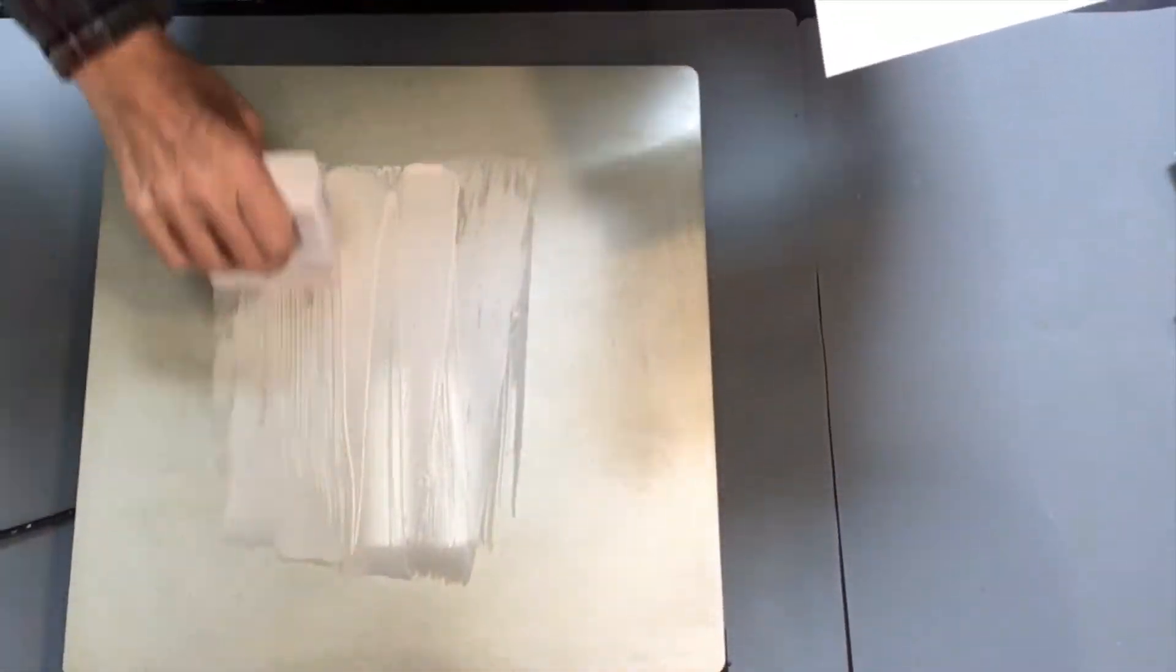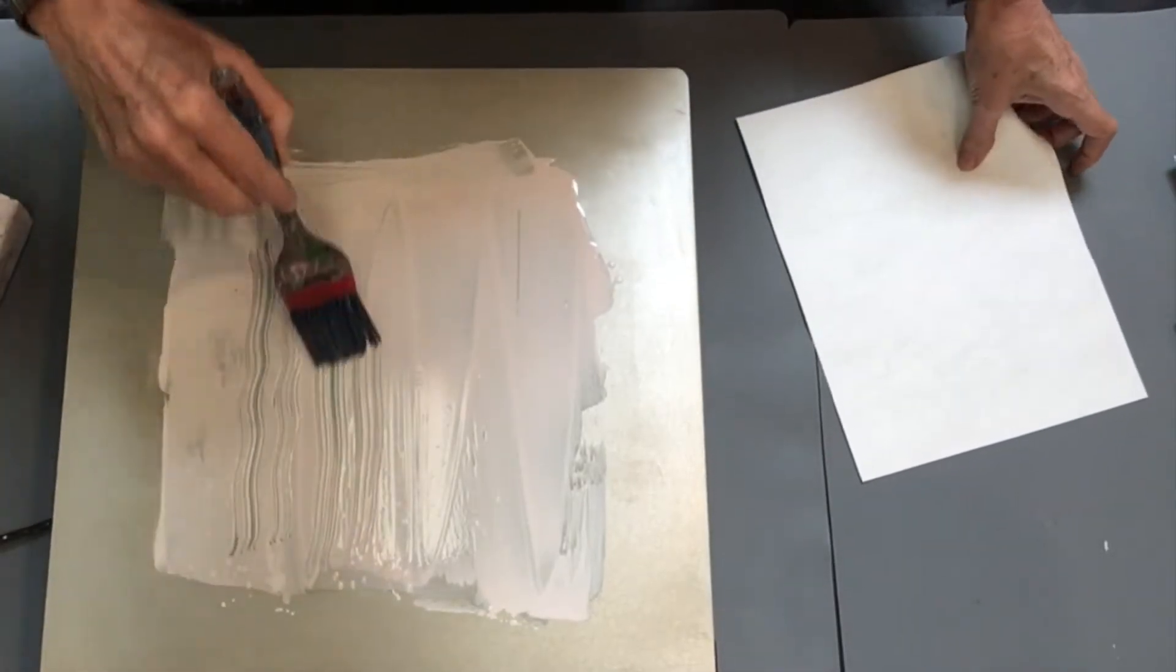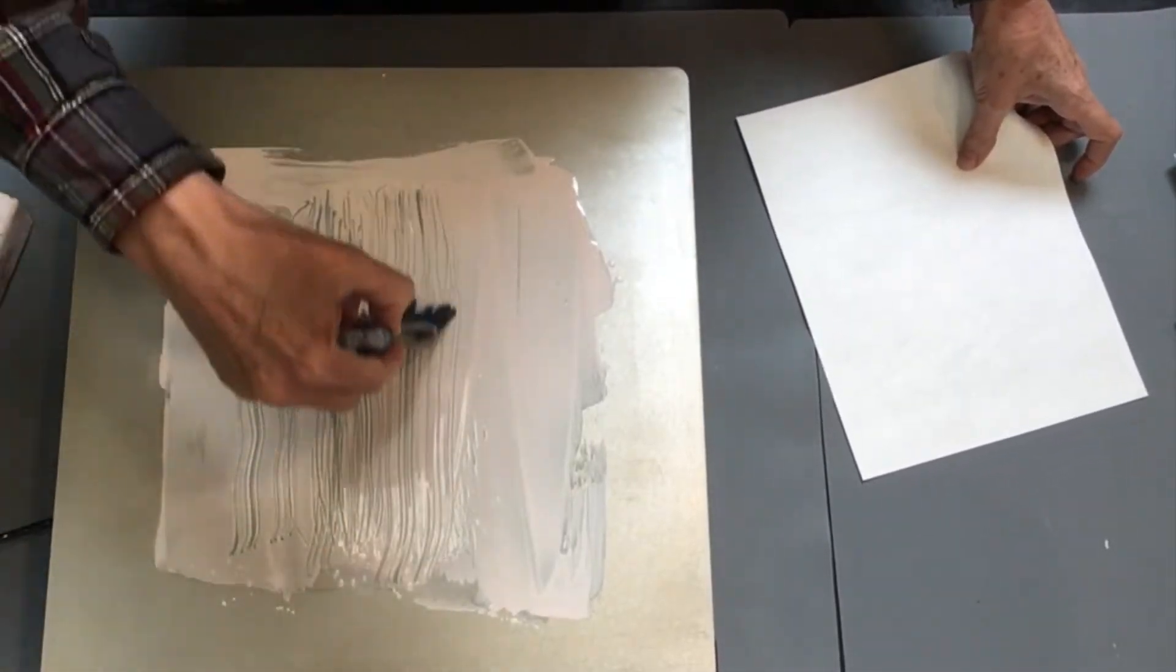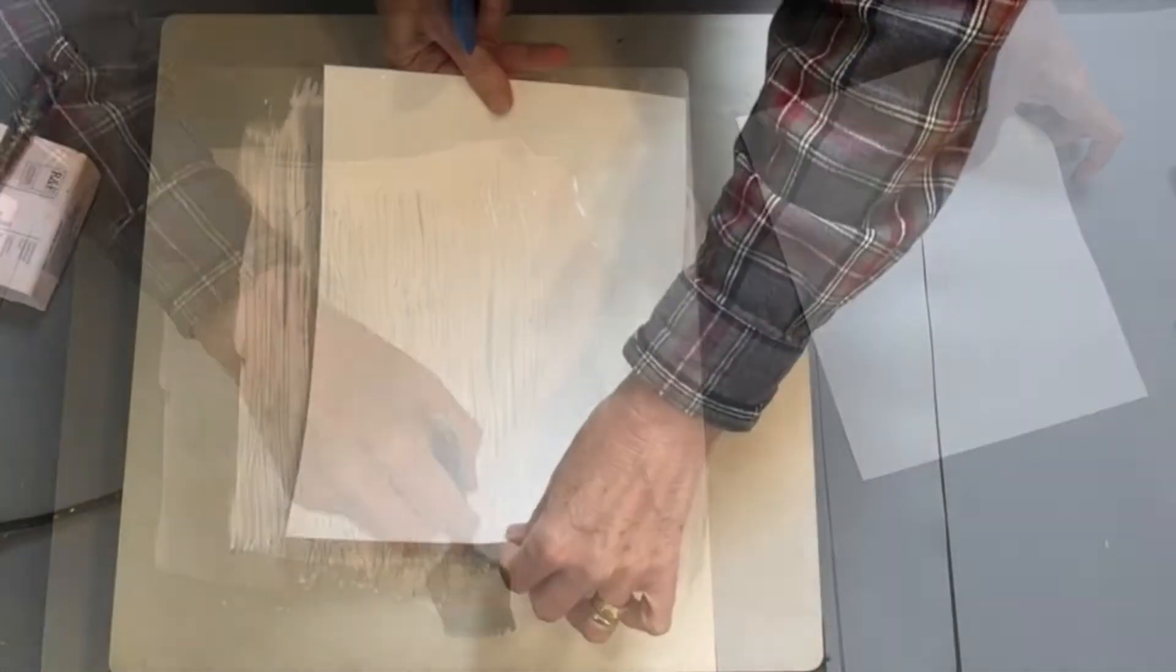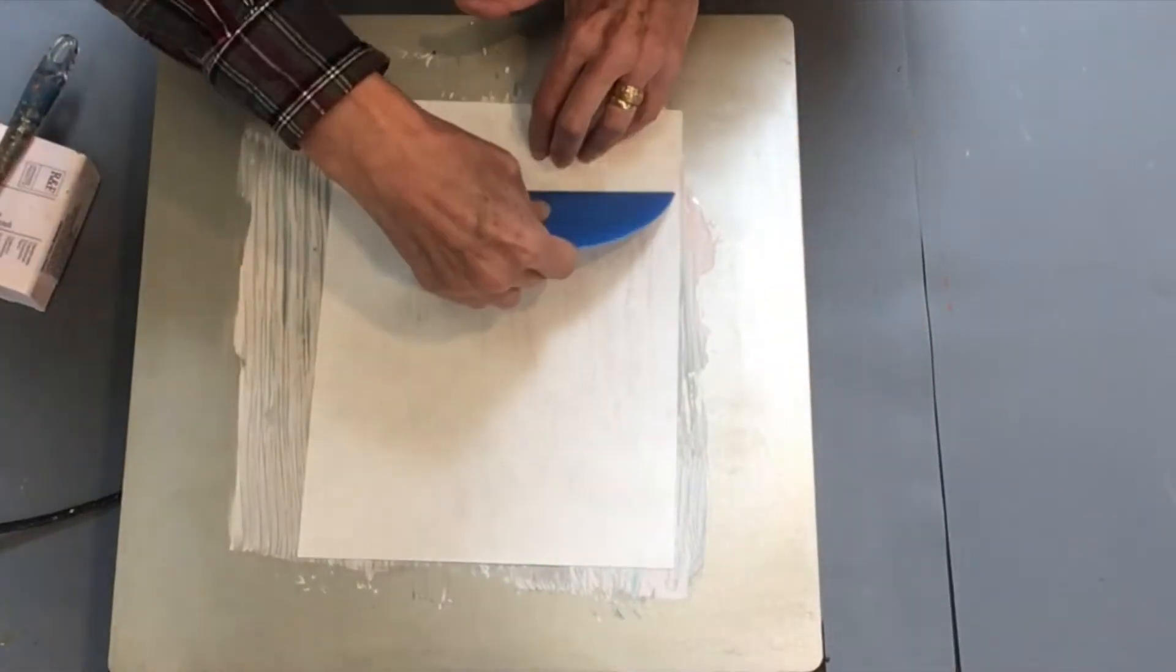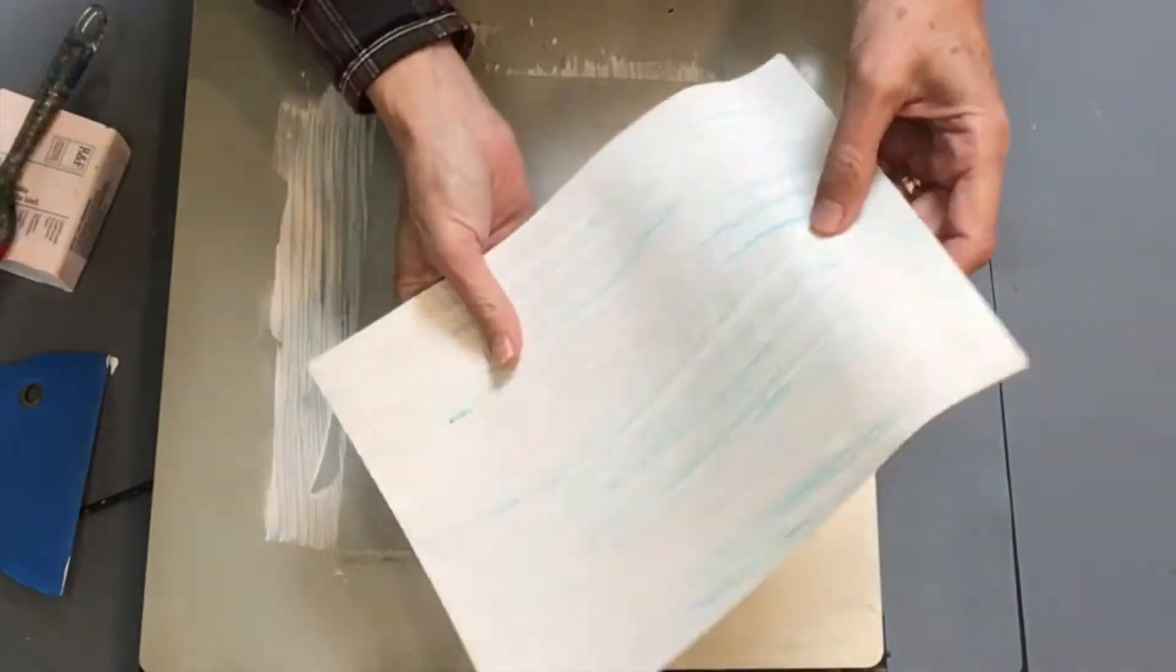First, I will happily improvise my encaustic monotype to get things going. It will serve as a backdrop for my pigment stick prints. I just love watching the process unfold without a plan.